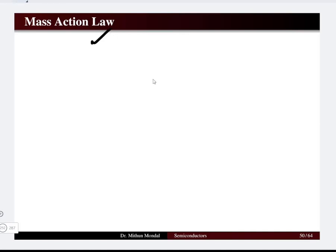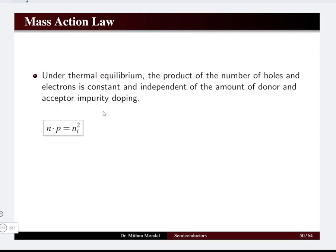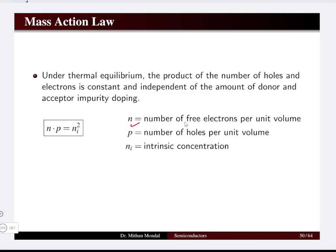Under thermal equilibrium, the product of the number of holes and electrons is constant. Whenever we take the product of the number of electrons and number of holes under thermal equilibrium, it remains constant and is independent of the amount of donor and acceptor impurity doping, since temperature remains the same. Mathematically, n×p = ni², where n is the number of free electrons per unit volume, p is the number of holes per unit volume, and ni is the intrinsic concentration of the semiconductor.